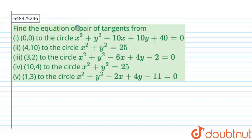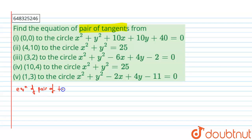Our question is: find the equation of pair of tangents. We have to solve each of these parts, so let's write down the theory first. The equation of pair of tangents on any circle from an external point is given by T² = SS₁. We will use this formula for each of the parts.